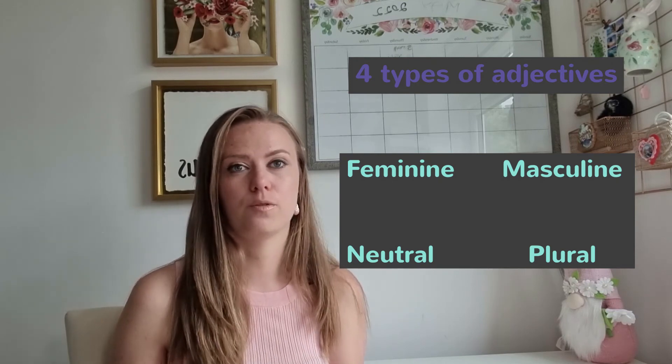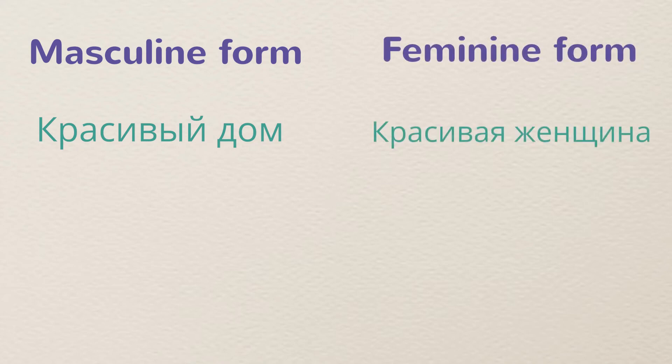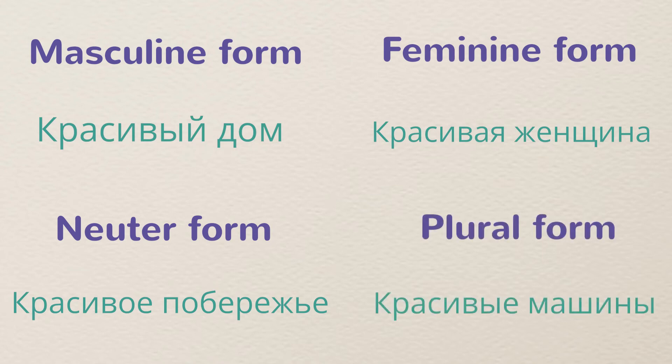In Russian, however, you must use the correct adjective form. For 'beautiful house': красивый дом (masculine). For 'beautiful woman': красивая женщина (feminine). For 'beautiful seaside': красивое побережье (neuter). For 'beautiful cars': красивые машины (plural). If you want to know more about Russian adjectives and all the different endings for feminine, masculine, neuter, and plural forms with more examples, check my detailed video on adjectives.